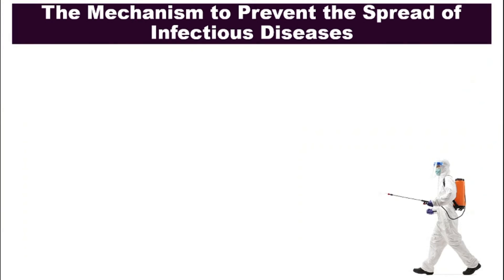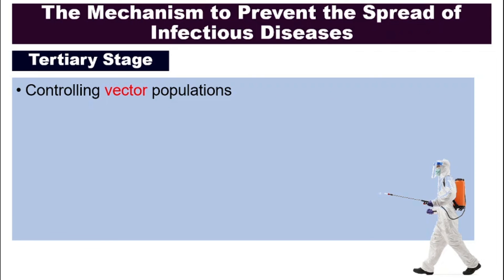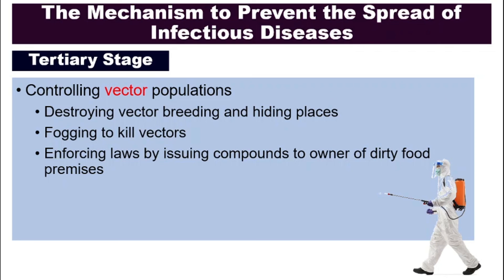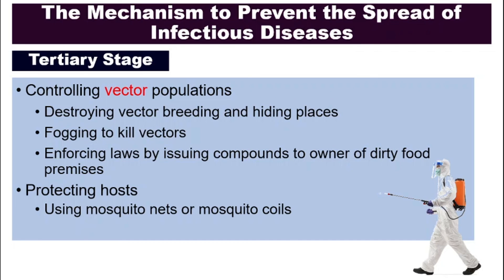On the tertiary stage, we need to destroy the vector — the animals that carry the disease — by controlling the vector population. For example, for dengue, we destroy the breeding and hiding places of the Aedes mosquito, use fogging to kill them, and enforce the law by issuing fines to owners of dirty food premises that encourage vector breeding. We also need to protect the host using mosquito nets, mosquito coils, and wearing thick clothes.